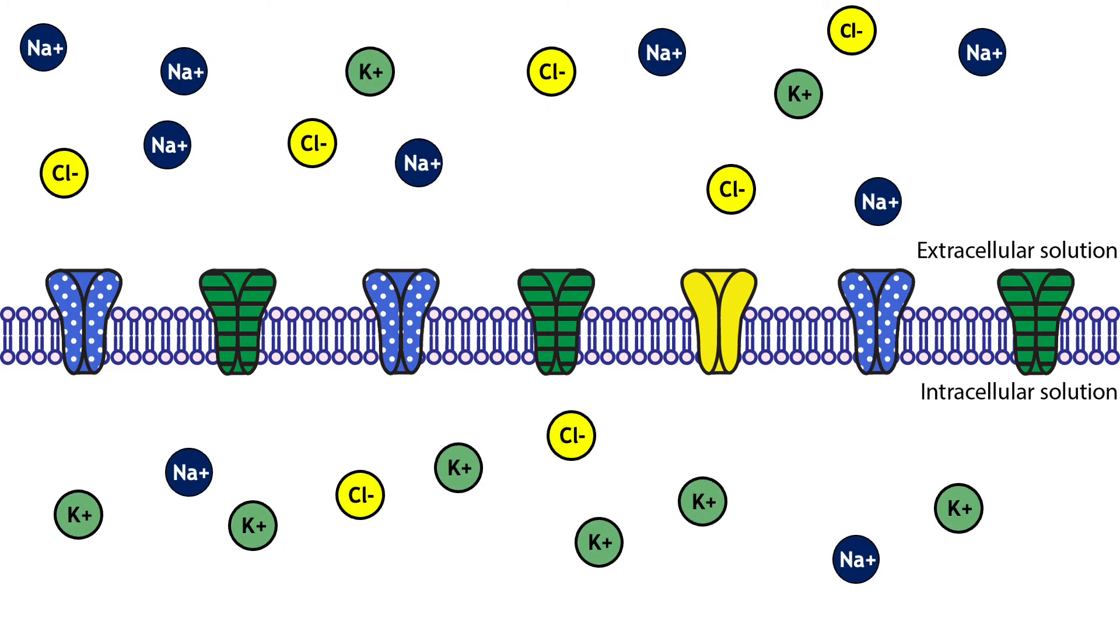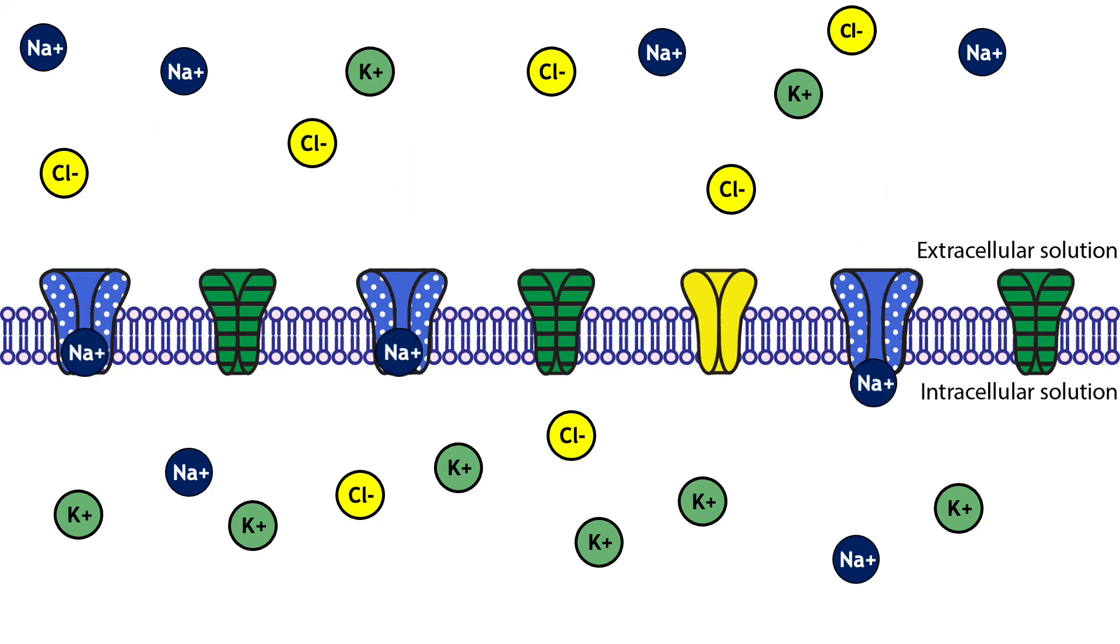Ion channels control ion movement across the cell membrane because the phospholipid bilayer is impermeable to the charged atoms. When the channels are closed, no ions can move into or out of the cell. When the ion channels open, however, ions can move across the cell membrane. Ions can only cross the cell membrane when the appropriate channel is open. For example, only sodium can pass through open sodium channels.